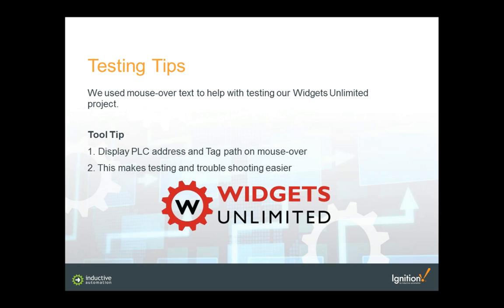One testing tip that works really well in applications is to use mouseover text or tooltip to help with testing. You can display the PLC address and the tag path on the mouseover. This makes testing and troubleshooting much, much easier. Let me give you a small demonstration of how you can use tooltips to discover the PLC address and tag path.